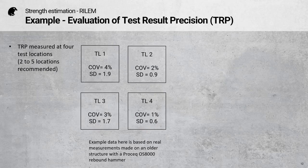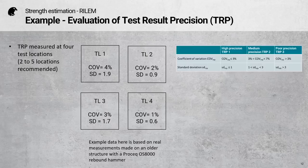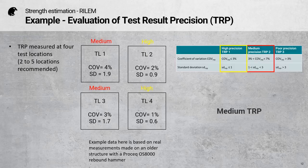I have to calculate the standard deviation, and I divide one by the other to get the coefficient of variation. I have to repeat this procedure at a number of test locations — between two and five are recommended, and in this case I've done it at four locations. The next step is to check the results against the table, and I can see that two of my results give a medium precision and two of them actually have a high precision. So the result is that I have a medium test result precision.